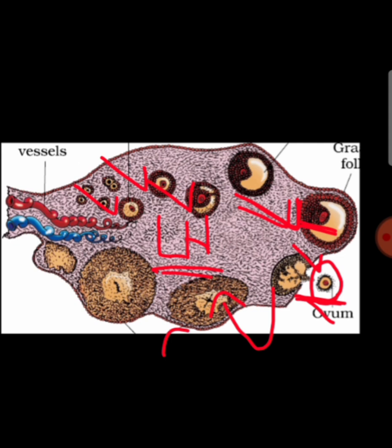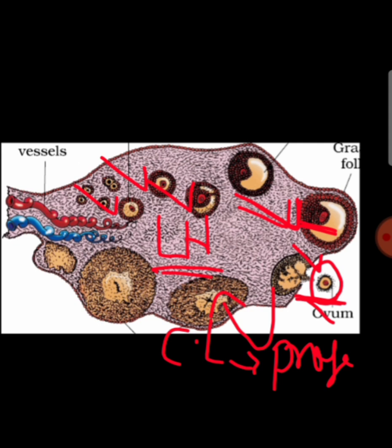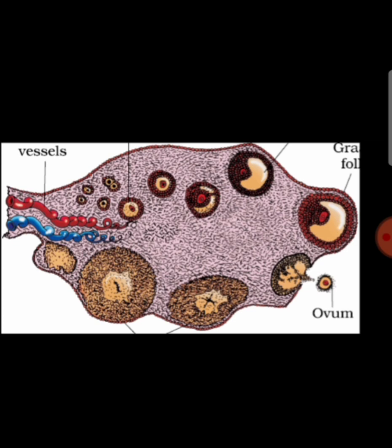After rupturing, the ruptured Graafian follicle converts to the corpus luteum — a yellow-colored structure — which secretes progesterone, the pregnancy hormone. If there is no fertilization, the corpus luteum converts to the white-colored corpus albicans and stops producing progesterone, which is responsible for the breakdown of the endometrium, starting a new menstrual cycle.